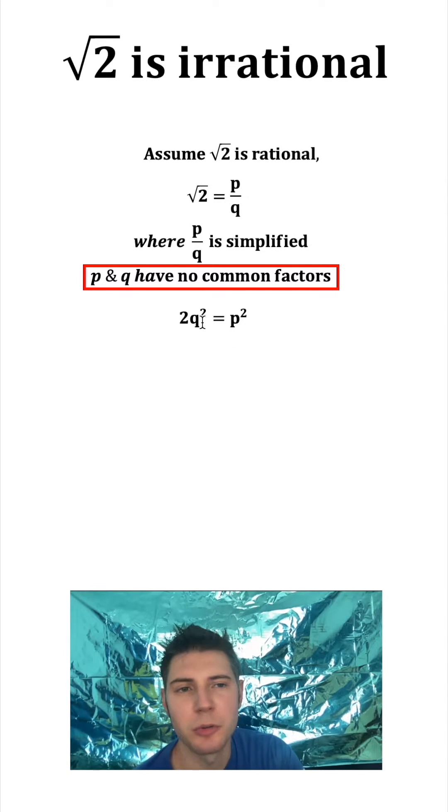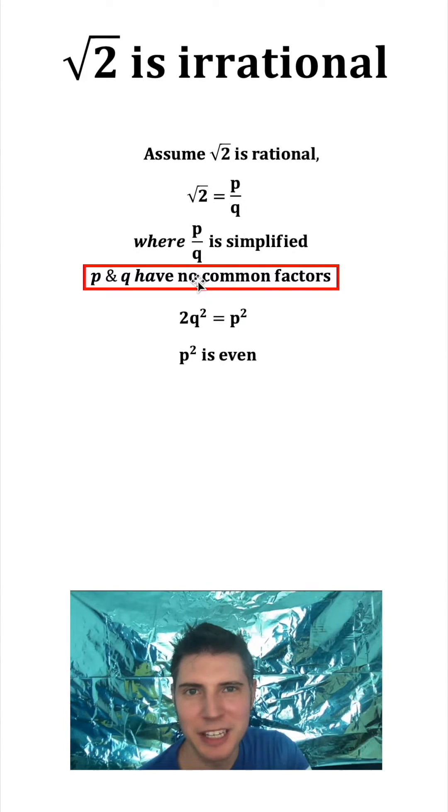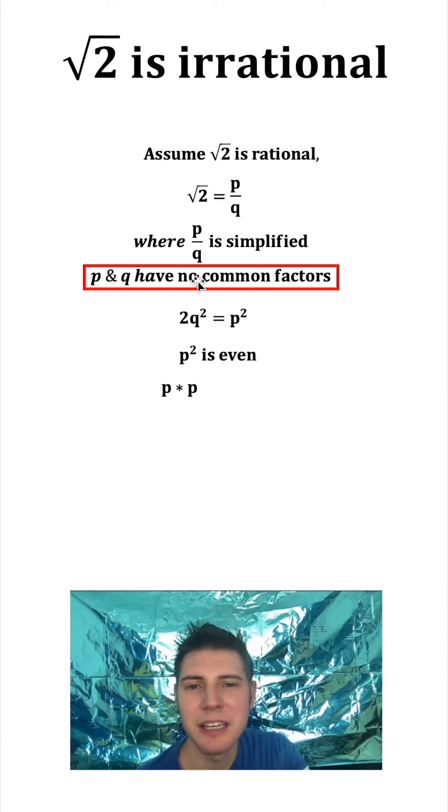Q is an integer. That means Q squared is also an integer. P squared is equal to 2 times an integer. We know that P squared has to be even. And in other words, P times P is even.